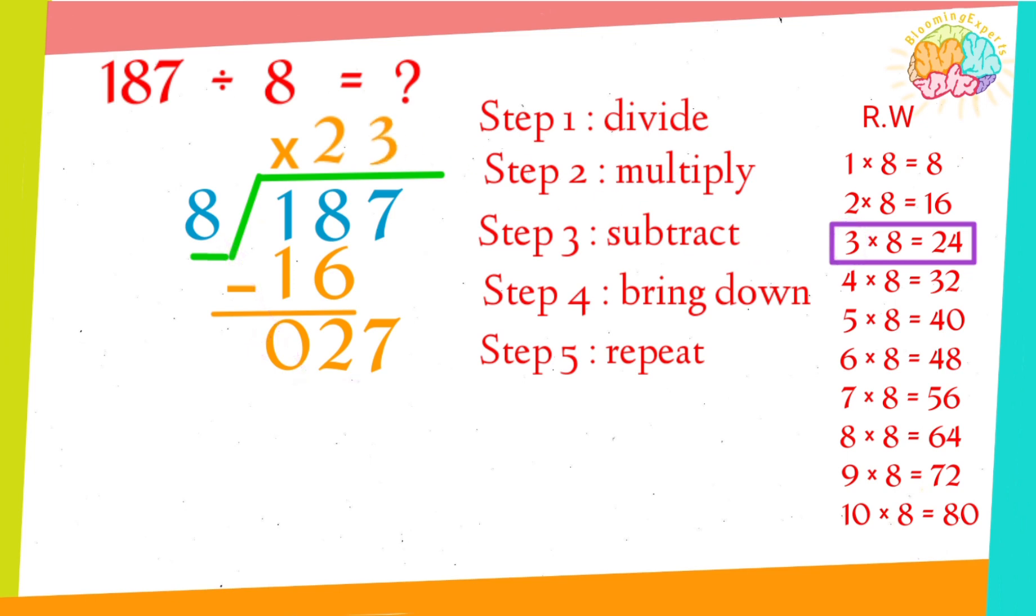So 24 divided by 8 is 3, and it is the quotient. Step 2: Multiply the quotient by the divisor. Write the answer below, it's 24.